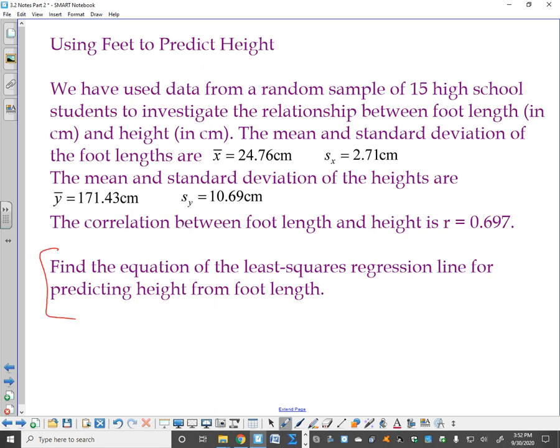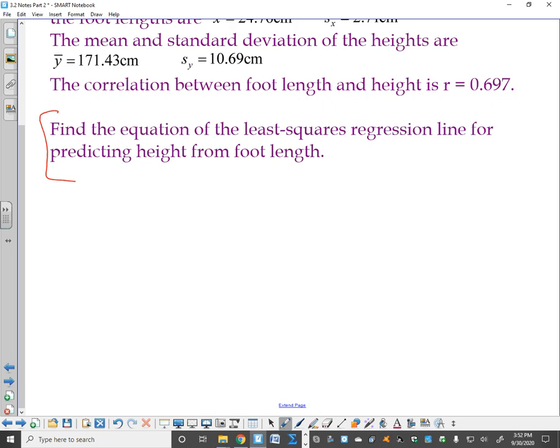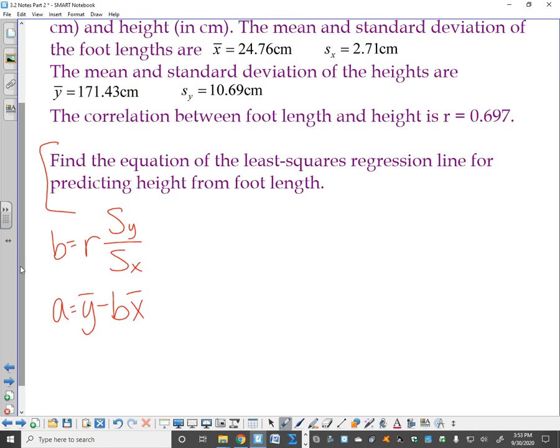It says find the equation of the least squares regression line for predicting height from foot length. So I have to show formulas. I have to show all my data that's going into those formulas. And then I have to have the results. And it all has to be labeled. So first I'm going to write my two formulas. Everything that I need is up there in black and my r. So b equals 0.697. Standard deviation of the y's is 10.69. And of the x's is 2.7. I want you to pause, type that in, and make sure you get the right answer because we want to make sure we know how to type it into our calculator. You should get 2.75.